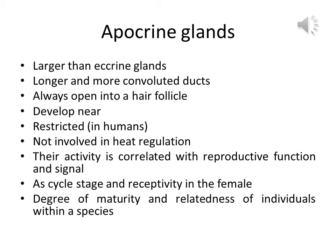Apocrine glands are larger than eccrine glands and have longer and more convoluted ducts. Their secretory coil is in the dermis and extends deep into the hypodermis. They always open into a hair follicle or where a hair once was. Apocrine glands develop near puberty. In contrast to the watery secretions of eccrine glands, apocrine glands produce a milky, whitish or yellow secretion that dries on the skin to form a film. Apocrine glands are not involved in heat regulation; their activity is correlated with reproductive functions.